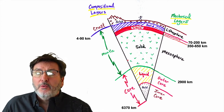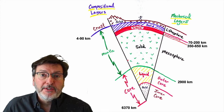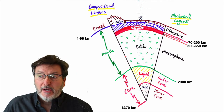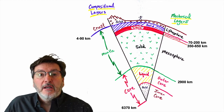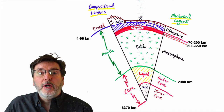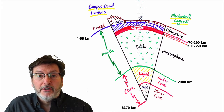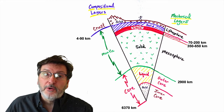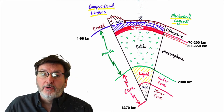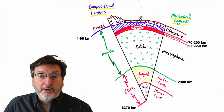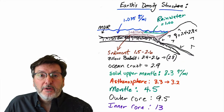That contrasts with the compositional boundaries inside the Earth: the crust, the mantle, and the core. It's important to note that the lithosphere contains two compositional layers — the crust and then a little bit of mantle that's frozen, underplating the crust. So the lithosphere has both components, and that'll become important in just a few minutes.